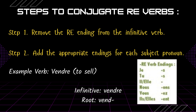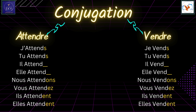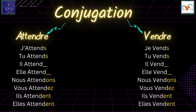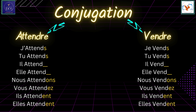Did you observe that nous, vous, and plural ils/elles forms have the same endings as ER ending verbs? Now let's have a look at the conjugation. For the verb attendre: j'attends, tu attends, il attend, elle attend, nous attendons, vous attendez, ils attendent, elles attendent.